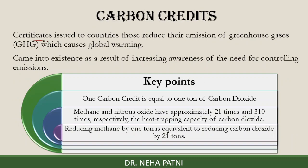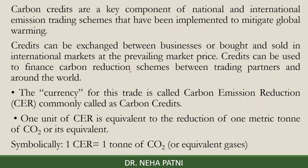Carbon credit is a tradable certificate issued to a country in order to reduce their greenhouse gas emissions. It came into existence as a result of increasing awareness. One carbon credit equals one ton of CO2. Methane and nitrous oxide are other greenhouse gases with approximately 21 times and 300 times the heat-trapping capacity of CO2, respectively. So if you reduce methane by one ton, you are effectively reducing CO2 by 21 tons.